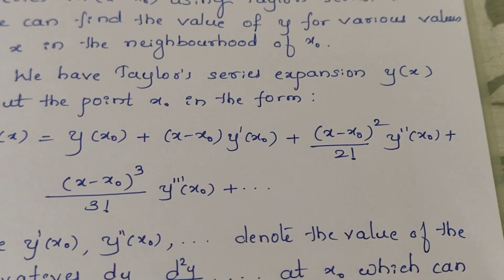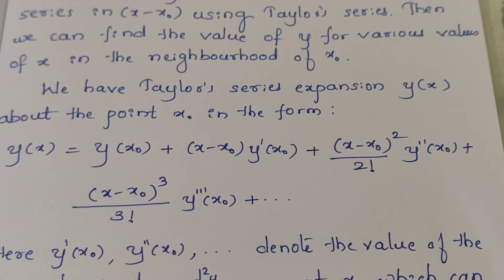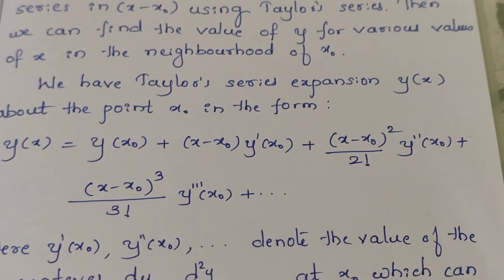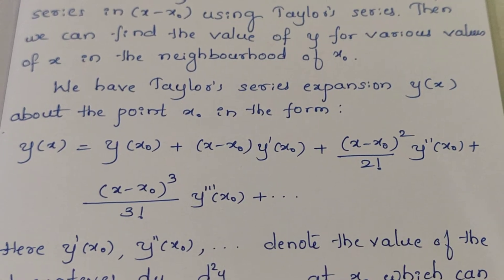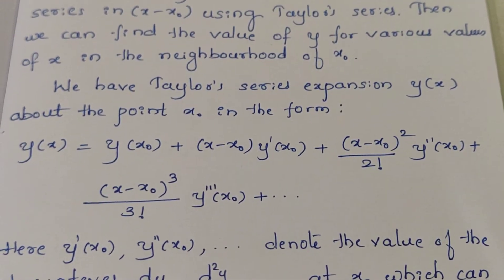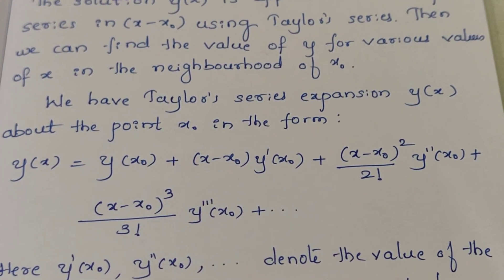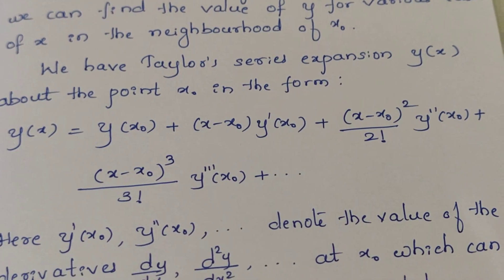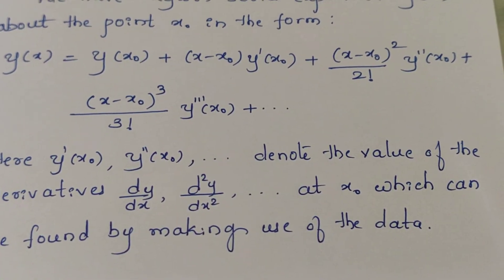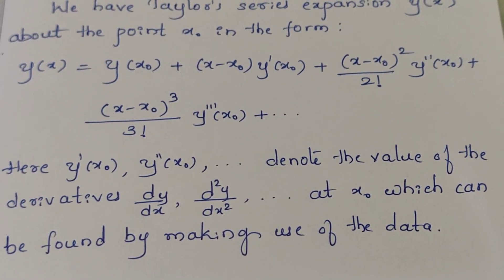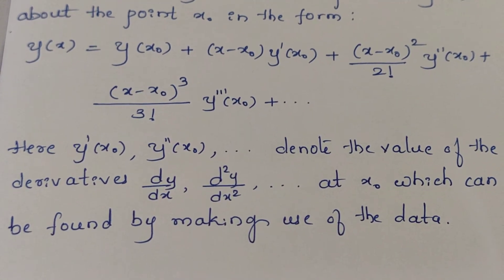The Taylor series expansion is: y(x) = y(x0) + (x − x0)·y'(x0) + (x − x0)²/2! · y''(x0) + (x − x0)³/3! · y'''(x0) + ... This is an infinite power series in terms of (x − x0), that is in the neighborhood of x0. Here y', y'', y''' denote the derivatives dy/dx, d²y/dx², and so on, evaluated at x0.